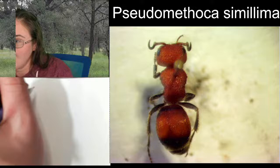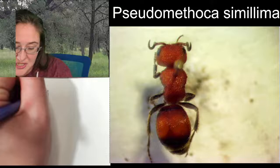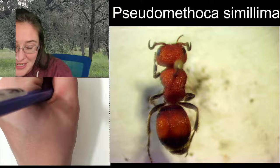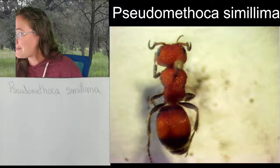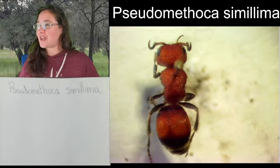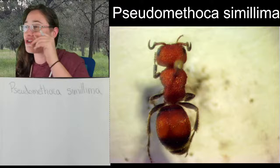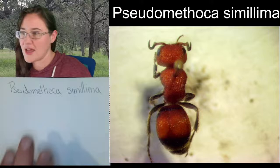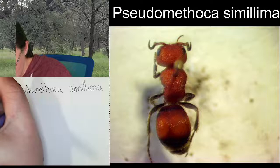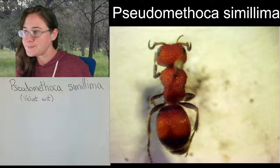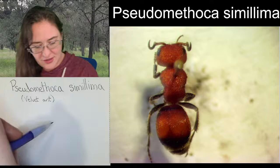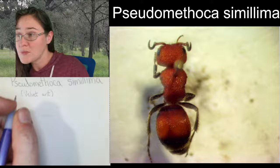This specimen, Pseudomethoca simula, was collected — I've just been going through the specimens I recently pinned, so this one doesn't even have a label yet. I collected it in New Jersey over in the Pine Barrens, on the same trip that I collected that deer fly and the tiger beetle we sketched last time. We voted top/dorsal — perfect, let's sketch her dorsally first. I'll write her common name, 'velvet ant,' here.